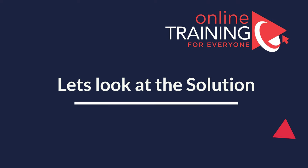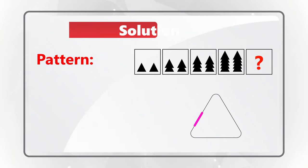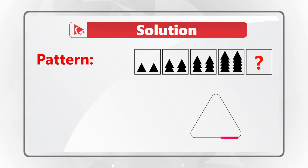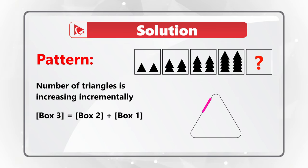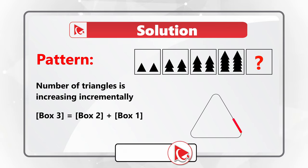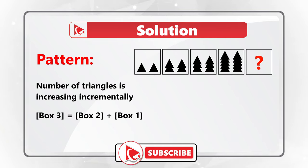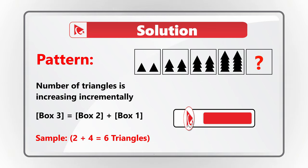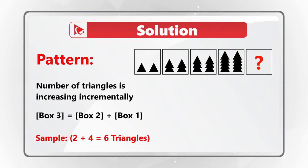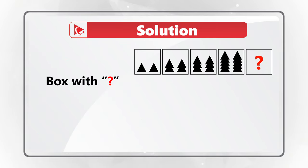To get to the correct answer, you need to look for patterns, and there are two patterns here. The first pattern is that each box contains triangles that are incrementally increasing. The second pattern shows how to calculate triangles in the next box: the triangles in the previous two boxes are summed up. For example, to get the number of triangles in square three, you add two plus four, which equals six.